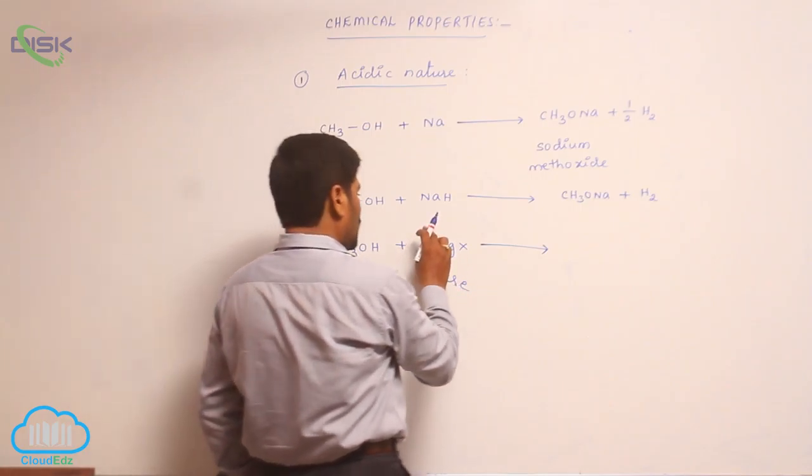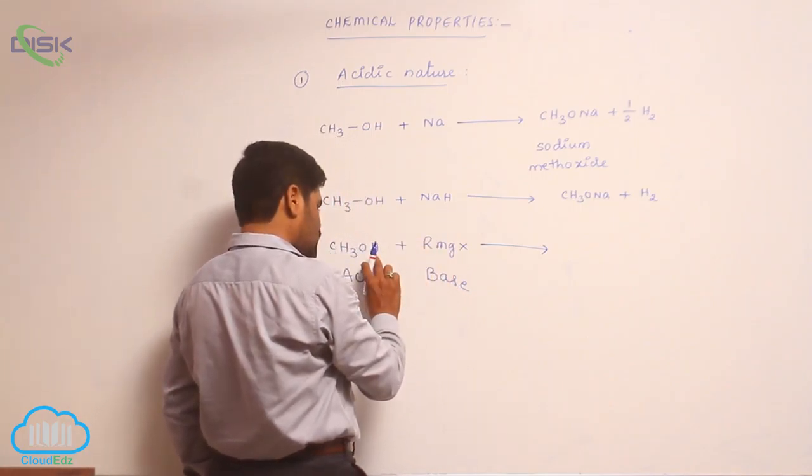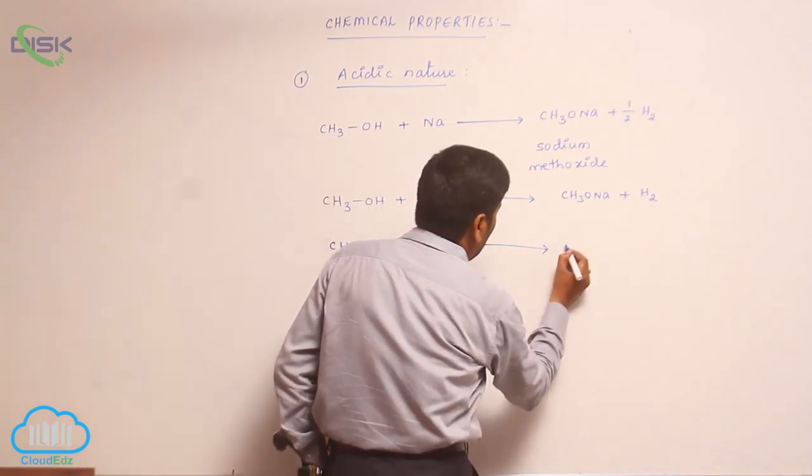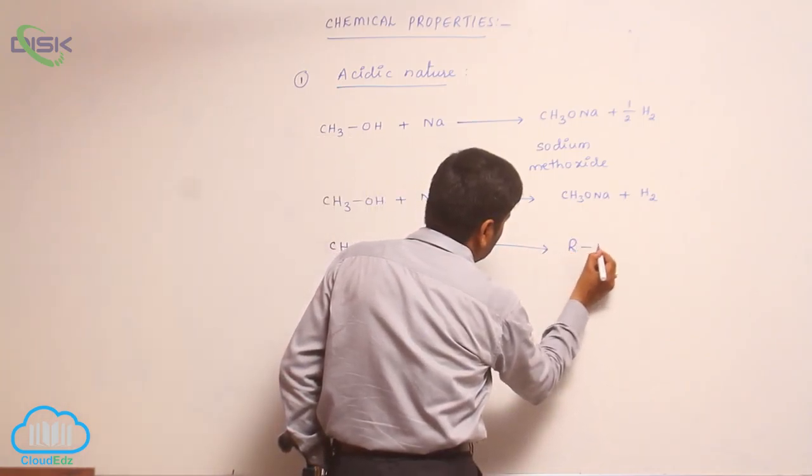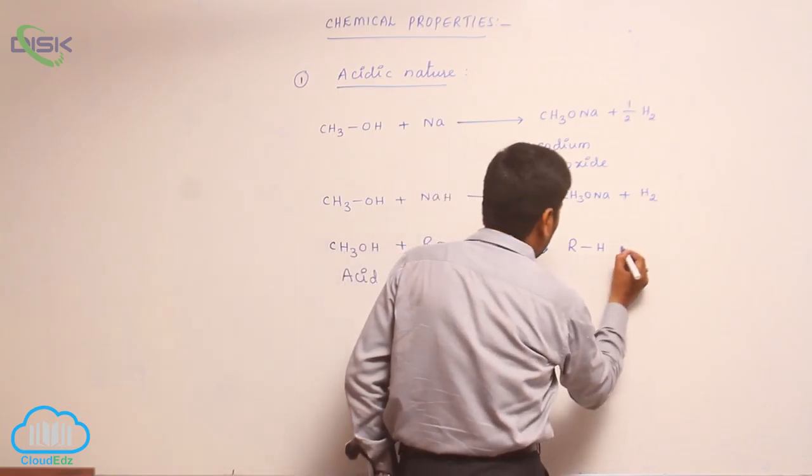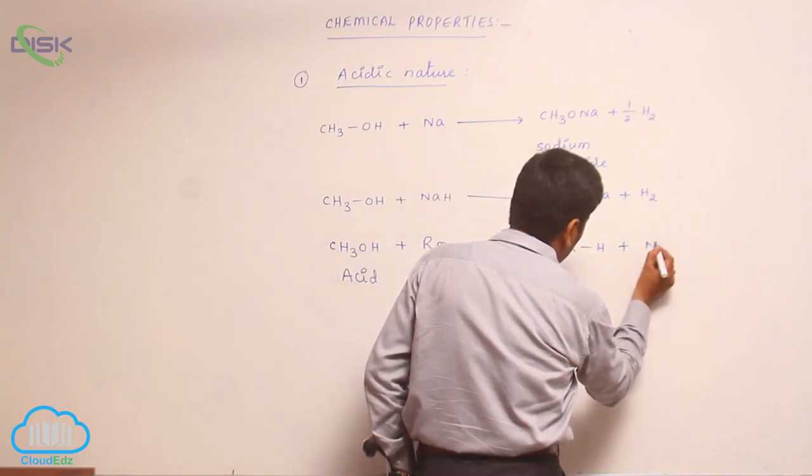So therefore, here is minus, it comes H plus, now it forms which one? R H, the byproduct is magnesium.